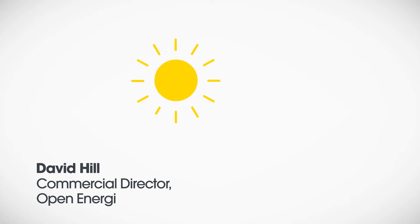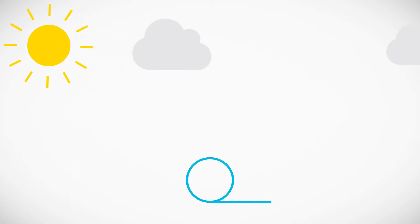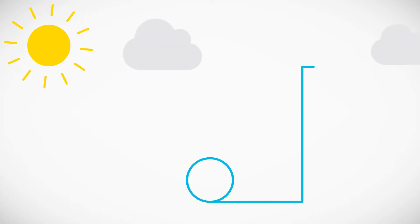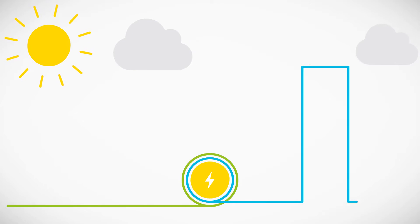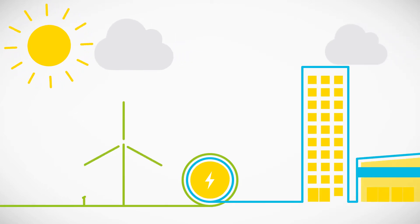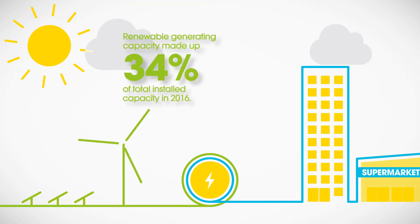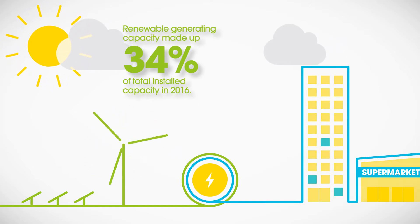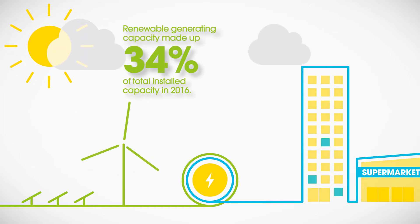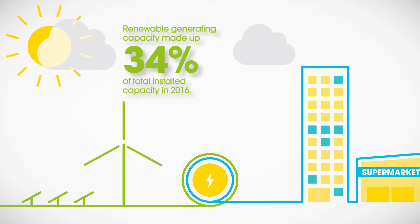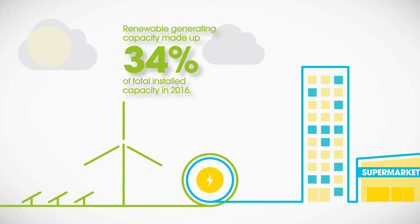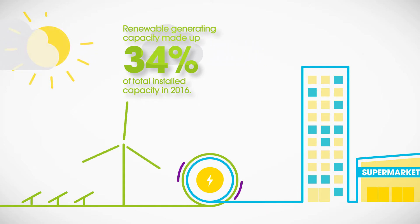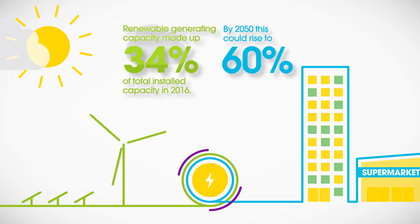Energy markets are changing, with new pressures and constraints affecting how energy is consumed. As renewable energy becomes more prevalent, one of the biggest issues is how to provide power when the wind isn't blowing or when the sun isn't shining. The cleanest, cheapest way to integrate large amounts of renewable energy is to manage patterns of demand in real time.